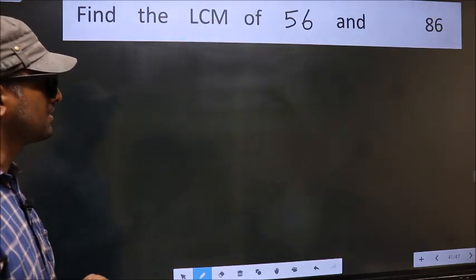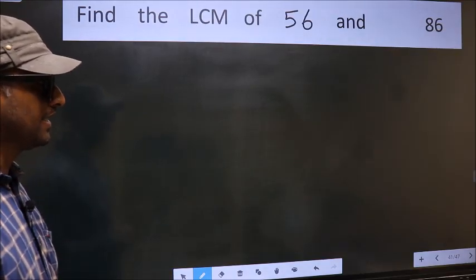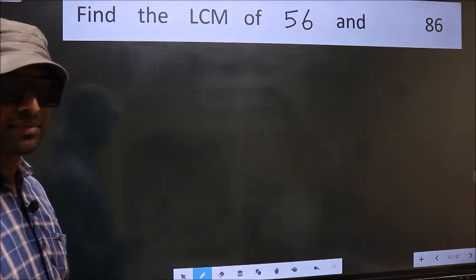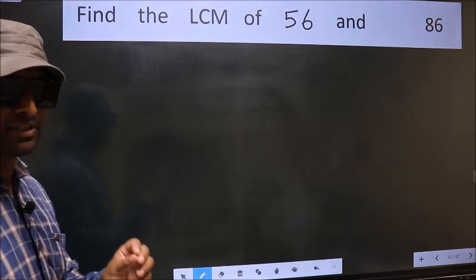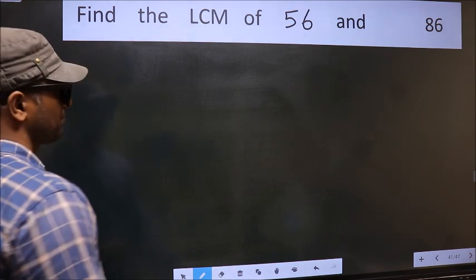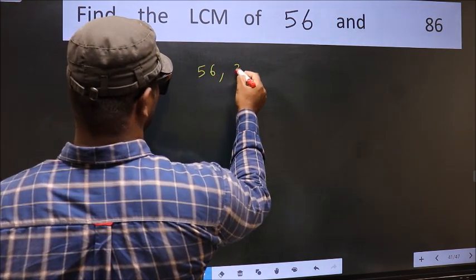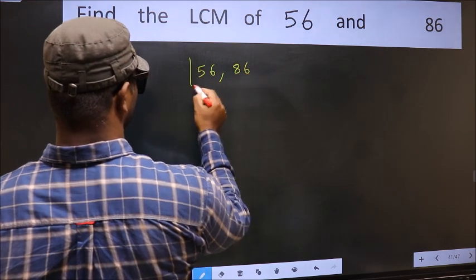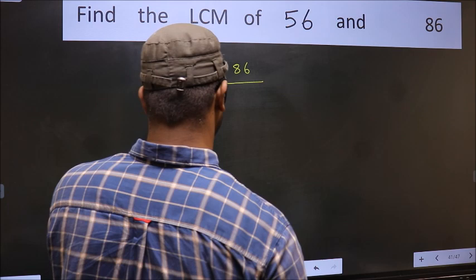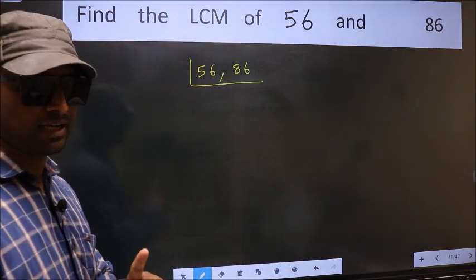Find the LCM of 56 and 86. To find the LCM, first we should frame it in this way: 56, 86. This is your step 1.